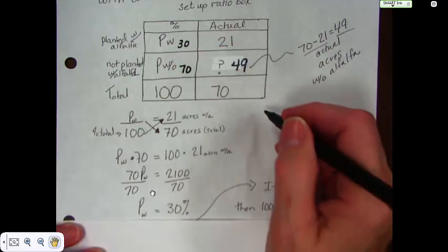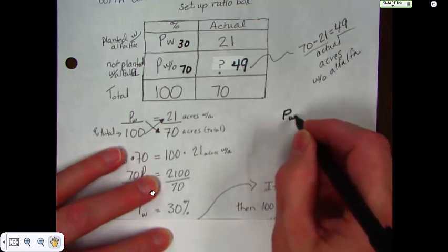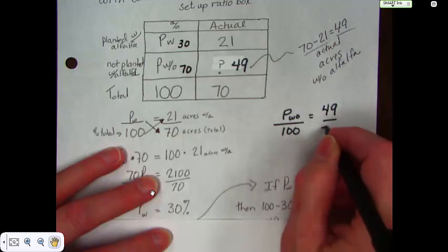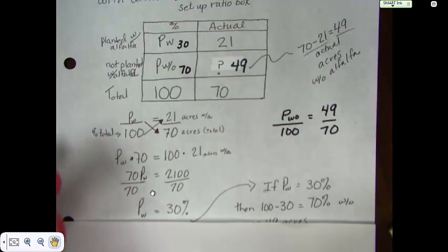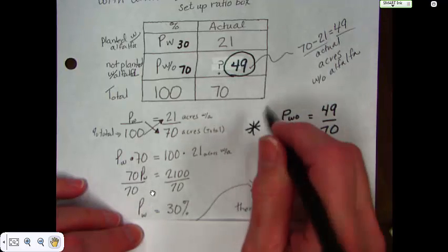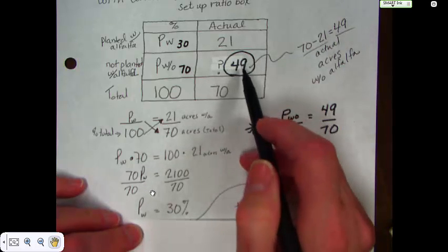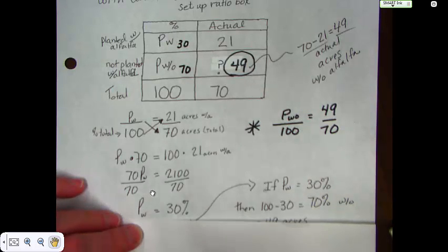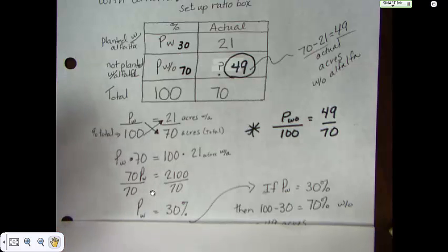Now I could have done it an alternative way. I could have gone P without over 100 equals 49 over 70 and solved that way and I would have gone to the answer. The only thing is, I am always hesitant to pick a number that wasn't given to me to do my calculations. In other words, 49 wasn't one of the original numbers that was given to me. And if I were to have made a math error in my subtraction, then this will be wrong and this will be wrong and that'll be wrong. Whereas if I just take numbers that I already have, I have no number here, but I have this and this and this. Then I'm guaranteed to at least get one of them right.